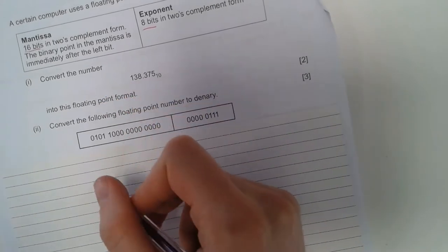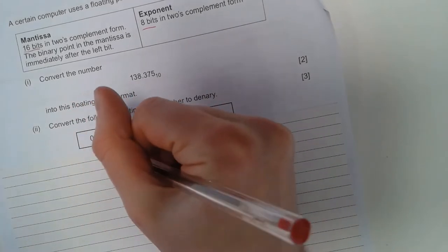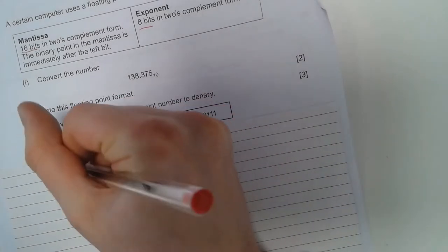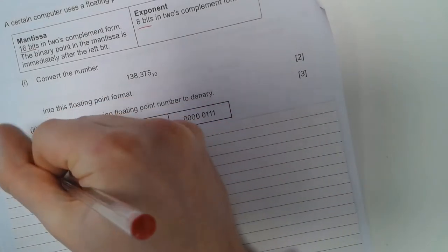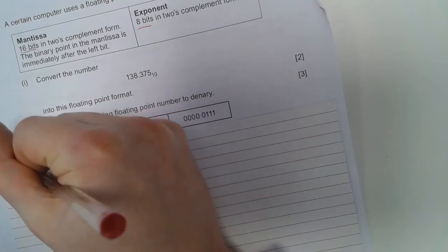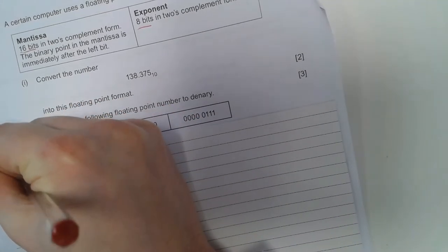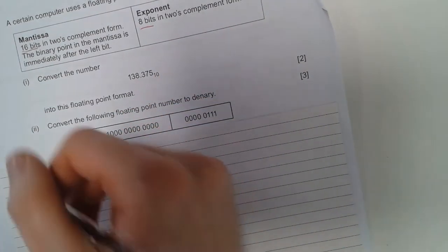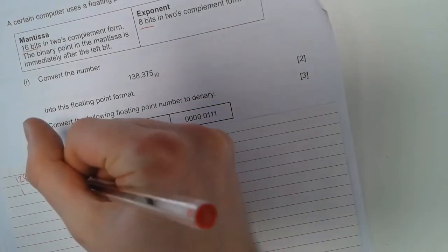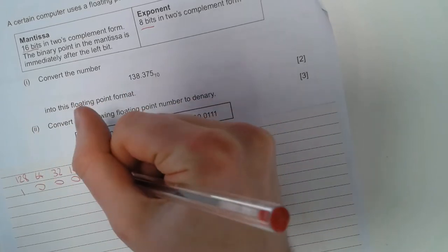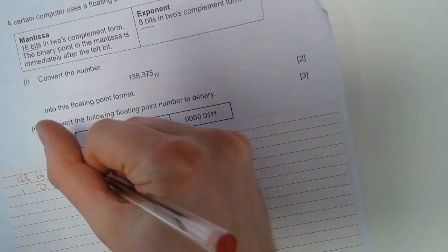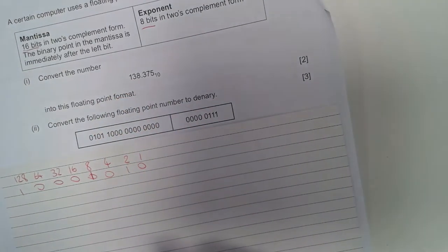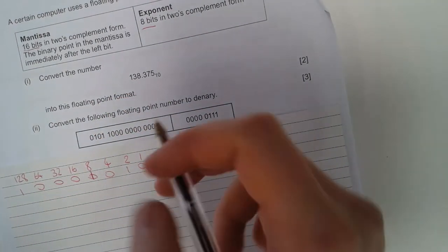So we have 138. 128, all we have left is 10. So this is going to be a 1. And there we go. This is how we have 138 in binary.